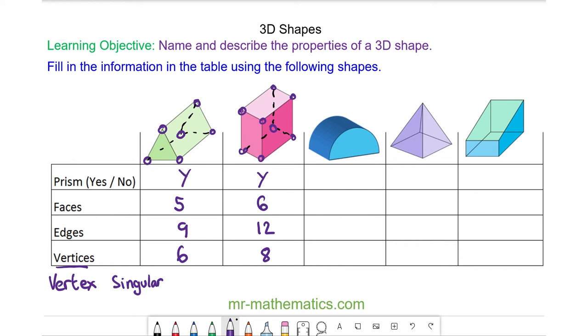So a semicircular cross section is repeated throughout the shape and the edges which connect the two cross sections are parallel. So yes it is a prism. It has one face at the front, one on the bottom, one on the back, and then another face curved around on the top. So that is four faces. It has one, two, three, four, five and six edges. And one, two, three, four vertices.